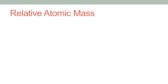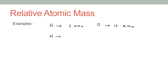Let's look at some examples. Hydrogen has an atomic mass of 1 AMU. Oxygen has an atomic mass of 16 AMU. Nitrogen has 14, and carbon has 12, which we already discussed. You don't need to calculate these relative atomic masses every time — you can get them directly from the periodic table.